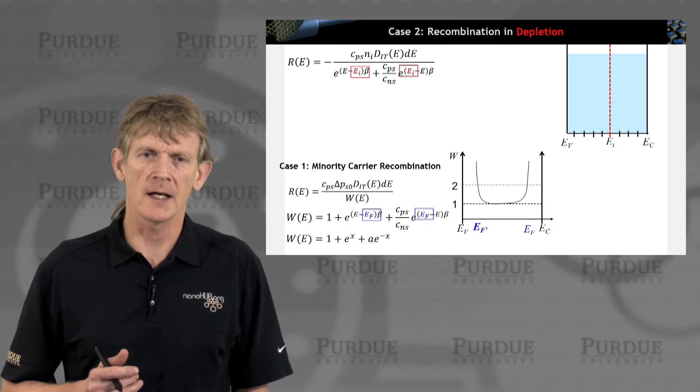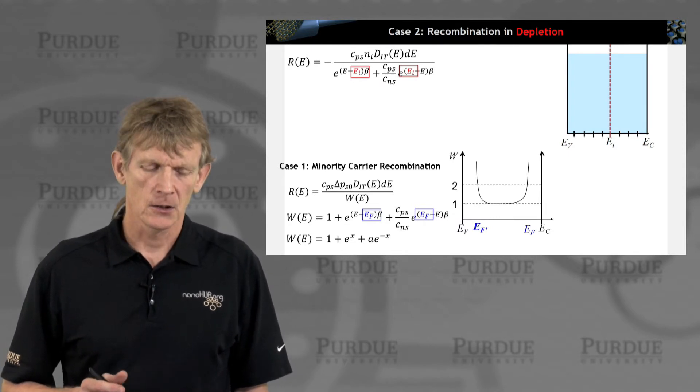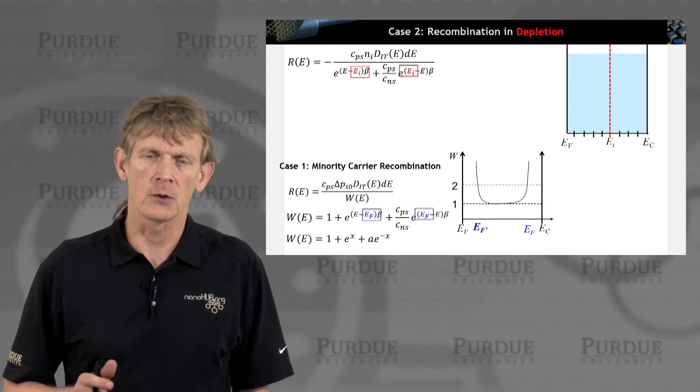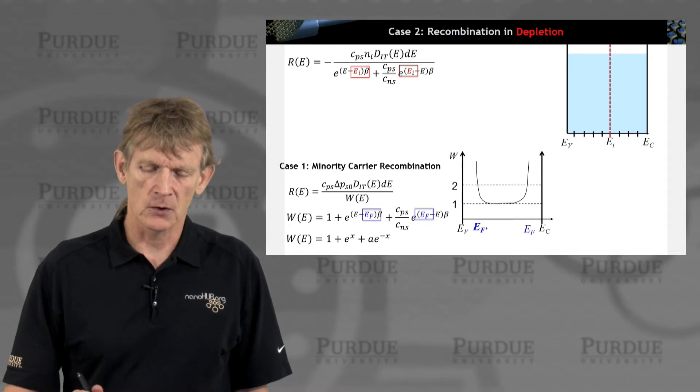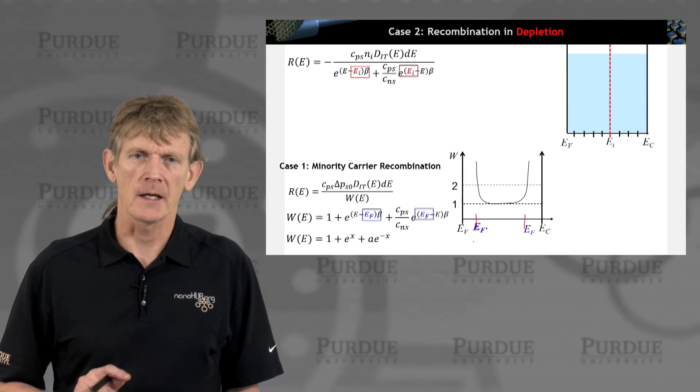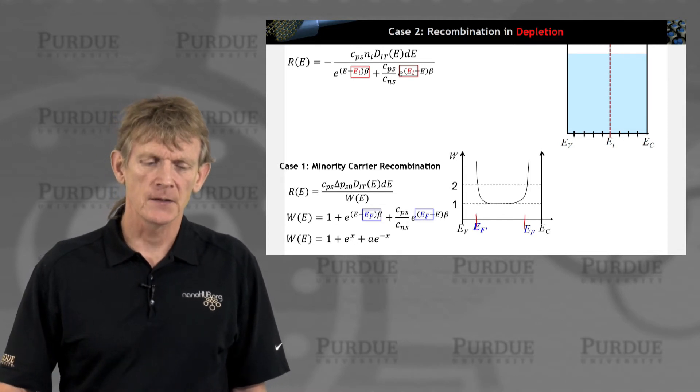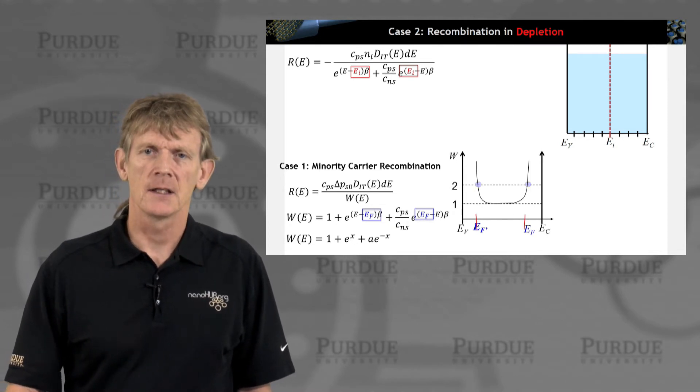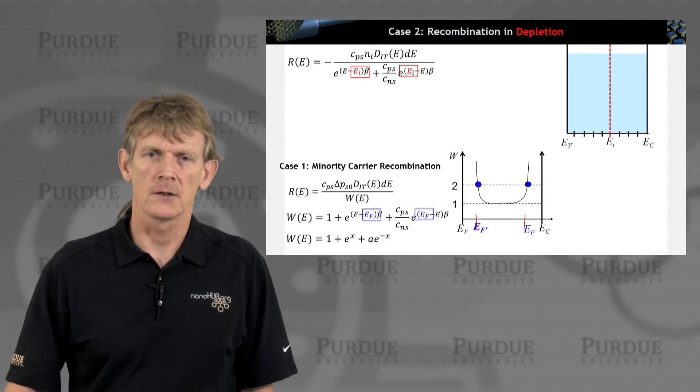This windowing function we had had an exponential going to the right and an exponential going to the left as being determined by some Fermi levels here.